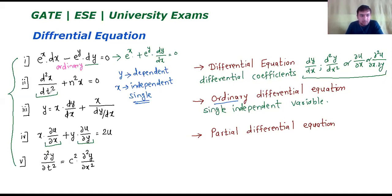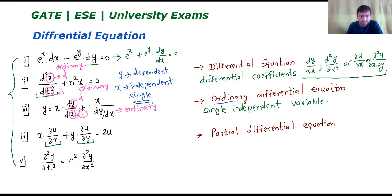The second equation, d squared x upon dt squared plus n squared x equals zero: here x is the dependent variable and t is the independent variable. Again it consists of a single independent variable, so this is also an ordinary differential equation. The third equation, y equals x dy by dx plus x upon dy by dx: y is the dependent variable and x is the independent variable, so this is also an ordinary differential equation. Equations 1 to 3 are all ordinary differential equations.